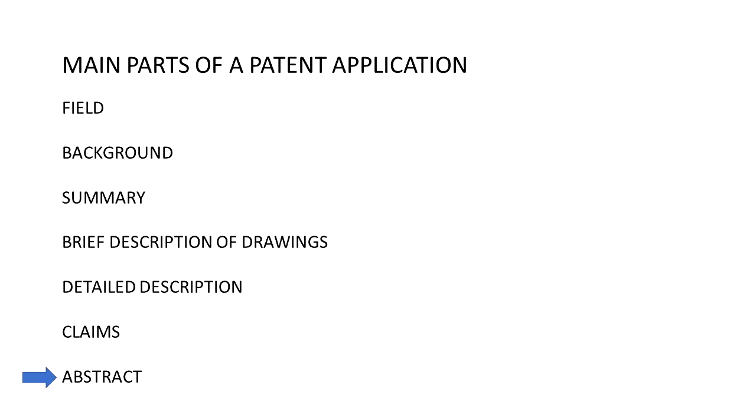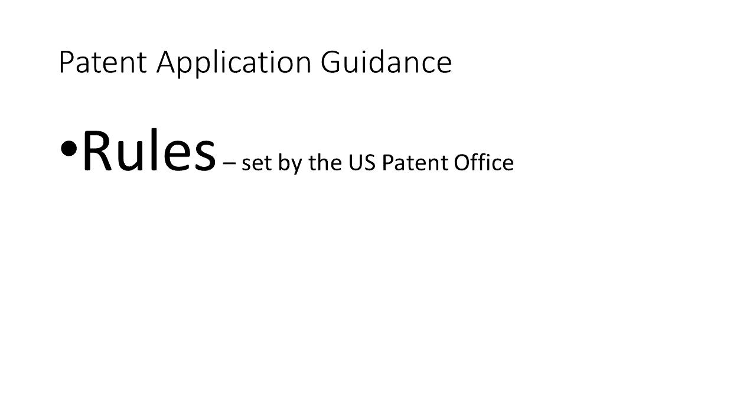And the abstract, which is a summary paragraph of your invention. For this episode we're going to be focusing on the background, but before I get into that I want to take a quick detour to talk about what shapes and guides how we write patent applications — and it comes down to three main things.